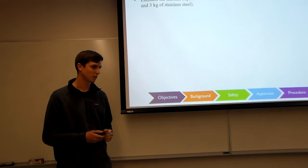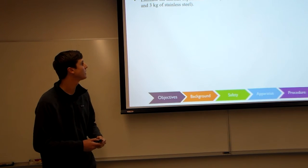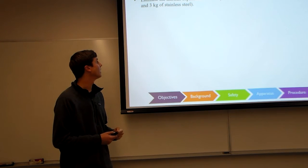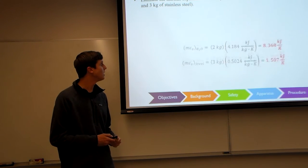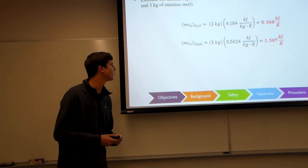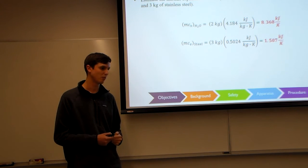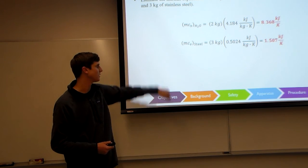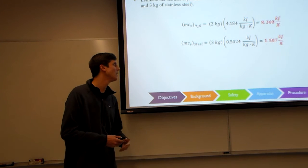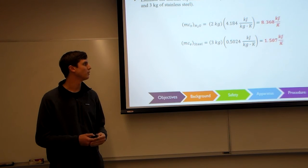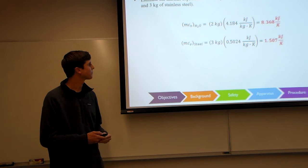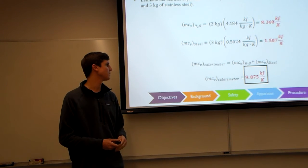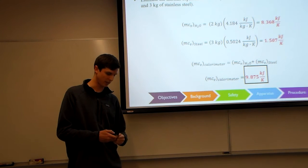So just some expected results. When we're measuring to find the thermal capacitance, we're going to take into account the two kilograms of water and the three kilograms of stainless steel. We can do that by saying that the thermal capacitance of water is equal to roughly 8.4 kilojoules per Kelvin. Same with steel, based off of stainless steel 304, we found that to be roughly 1.5 kilojoules per Kelvin. Then you can get the total thermal capacitance of the system. We found roughly 9.9 kilojoules per Kelvin.